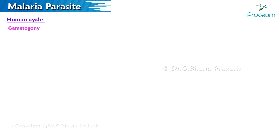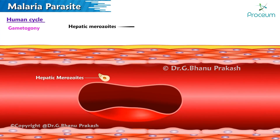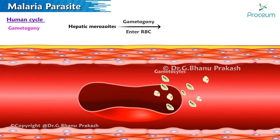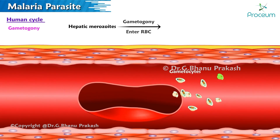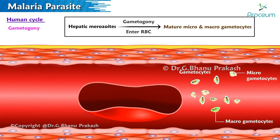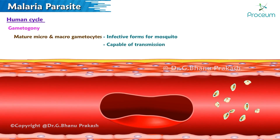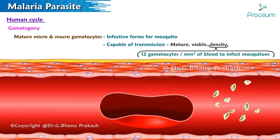Gametogony: some hepatic merozoites, after entering red blood cells, transform into sexual forms called gametocytes. Mature micro and macro gametocytes are formed, which are the infective forms for the mosquito. They are capable of transmission only when mature, viable, and present in sufficient density — at least 12 gametocytes per cubic millimeter of blood.